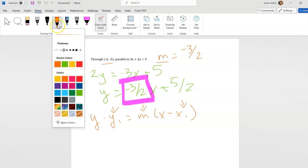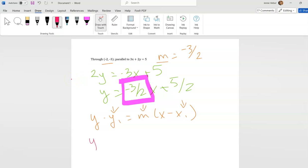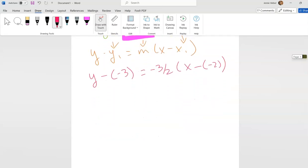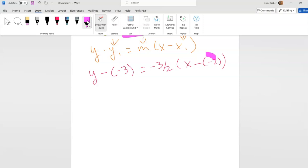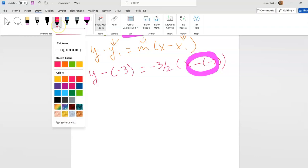So then I have y minus negative 3 equals negative 3 halves times x minus negative 2. You'll notice here - very important - there's double signs here. Why are there double signs? Because there is a negative in the formula and there's a negative in my problem. Don't lose one of them because you thought it's already there - it's not already there.